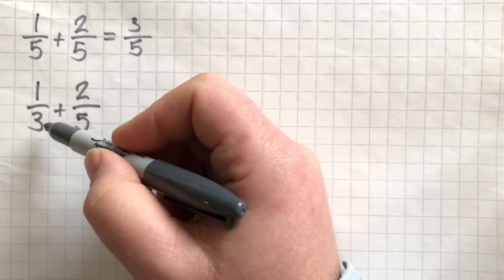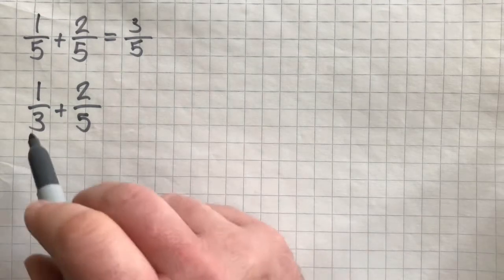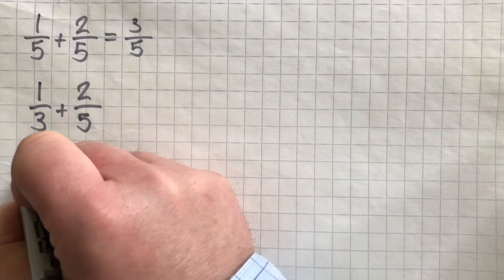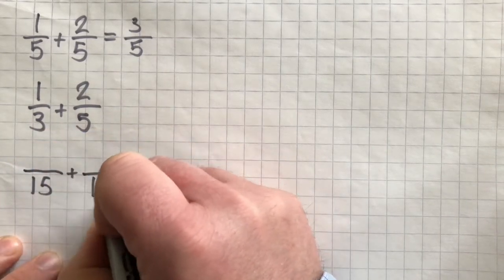We need to think of a number that's in the 3 times table that is also in the 5 times table. If we think about the 3s: 3, 6, 9, 12, 15, 18, and the 5s: 5, 10, 15, we realize that 15 is the first number that appears in both times tables.